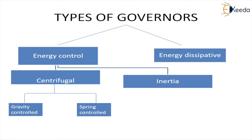There are various types of governors. The control of speed can be done in two ways: one by controlling the energy, and second by dissipating the energy. In energy-dissipative governors, excessive energy is lost through heat or other measures. This is not desirable for large systems since we do not want to lose a lot of energy, so we usually use the energy control method.